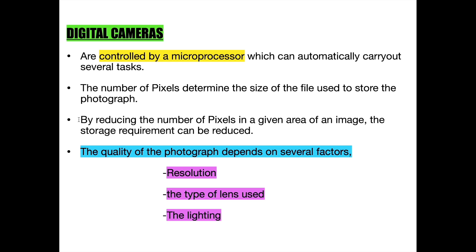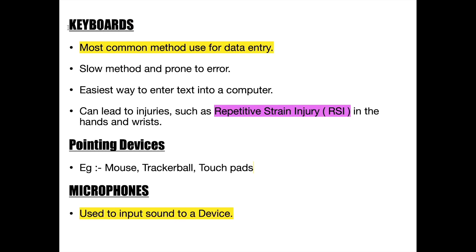The next input device is the keyboard. The keyboard is the most common method of entering data into a computer system. It is however a slow method and has a greater possibility of errors during usage, but it is the easiest and best method present for data entry. Frequent use of the keyboard can lead to an injury known as repetitive strain injury. Aside from the keyboard, there are many other devices used for data entry known as pointing devices.